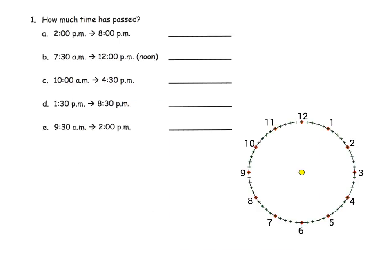So what do I mean by elapsed time on a number line? For example, this one says 2 p.m. to 8 p.m. One way we could look at it is we can think about that hour hand pointing at the 2, and then it's going to go to 8. So it starts at the 2 and it moves over 1 hour, 2, 3, 4, 5, 6 hours. So 6 hours have passed.